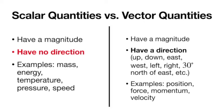Examples: velocity is just what happens when you have a speed and you assign it a direction. Speed is the magnitude of velocity. If something is moving 3 meters per second, you want to know if that's moving directly toward my head or to the left or up — direction is meaningful for something like velocity. We'll see force and momentum later today; those are other vectors that have both a magnitude and a direction.